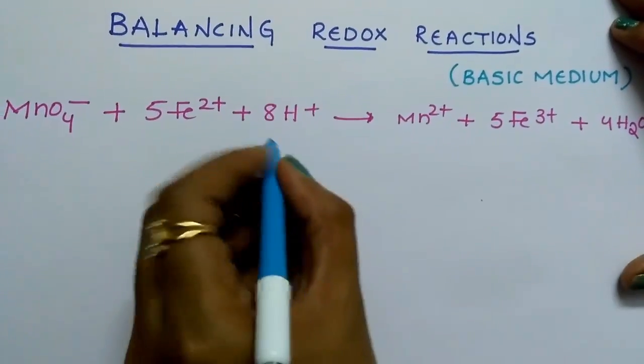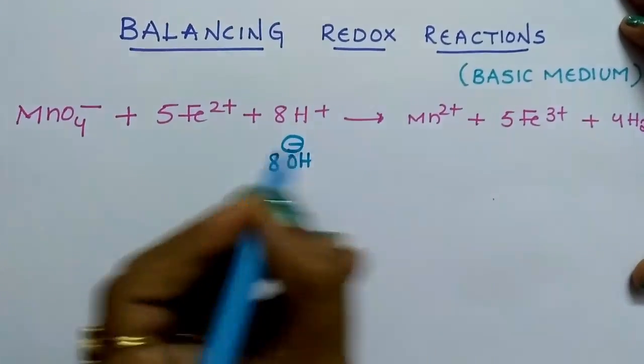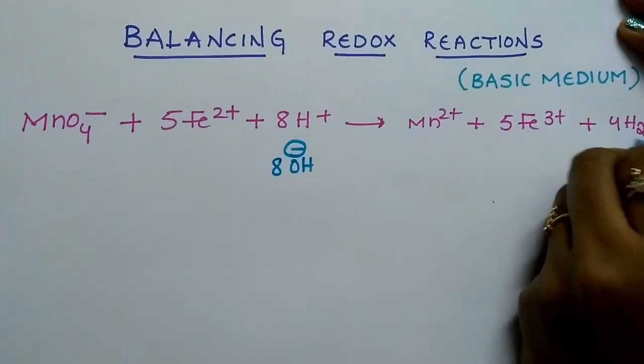Here 8 H plus ions are there. So add 8 OH minus ions this side as well as 8 OH minus ions toward the product side.